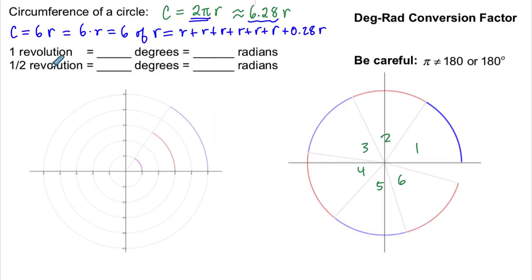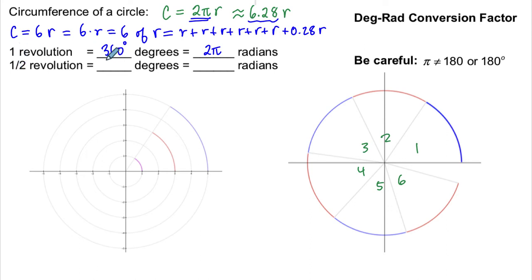This sets up our conversion factor. We know a whole revolution is 360 degrees, and it takes exactly 2π radians — where 2π is approximately 6.28. Dividing both sides by 2: half a revolution is 180 degrees, and that equals π radians. Since π is approximately 3.14, we get 1, 2, 3 radians plus about 0.14 of a radian. This is our new conversion factor, just like 1 minute equals 60 seconds or 1 kilometer equals 1,000 meters.